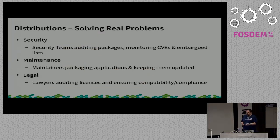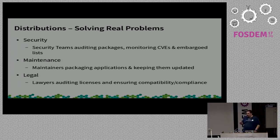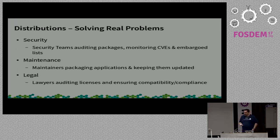Because any responsible distribution had a care about the security of the software they were delivering to users. They have security teams. They're auditing the packages they're putting in their distribution. They're monitoring CVEs for the packages in their distribution. They're rolling out security updates when it goes wrong. In the case of enterprise or commercially linked distributions, you're also likely to have them on the embargoed security list and therefore getting information about those CVEs before they end up being public — so you've got a chance of getting an update out on the day of the announcement.